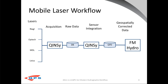In the mobile laser and Quincy-Fledermaus workflow, you start off directly interfaced to the scanner. Raw data is logged in a DB file within Quincy, and you can create the QPD in real time or post-process to create the QPD. That QPD is then brought into Fledermaus. The bundle you need in Fledermaus to do this is FM Hydro — sometimes called FM Topo with laser scanners — which does the data cleaning.